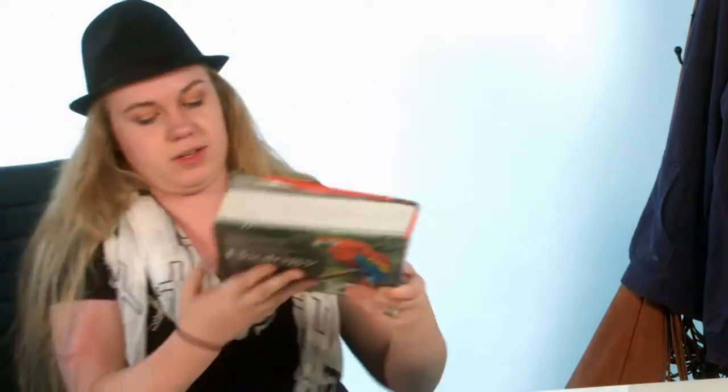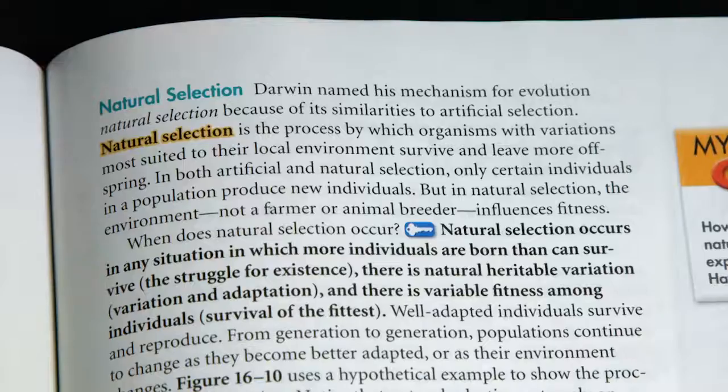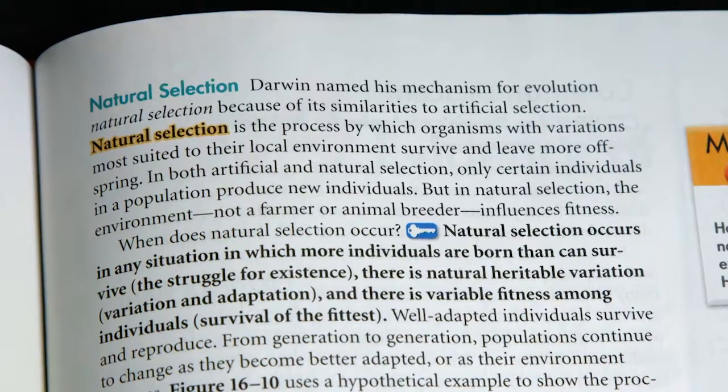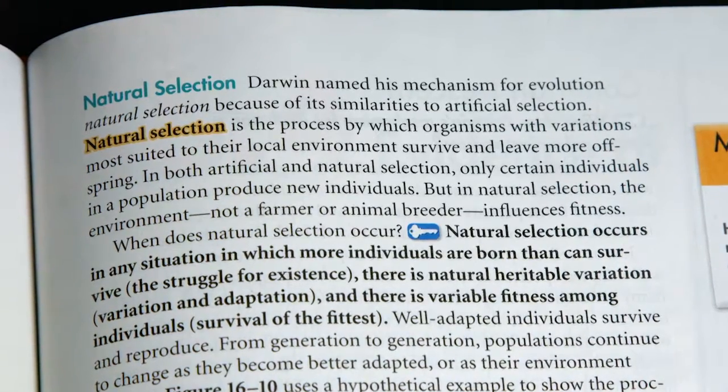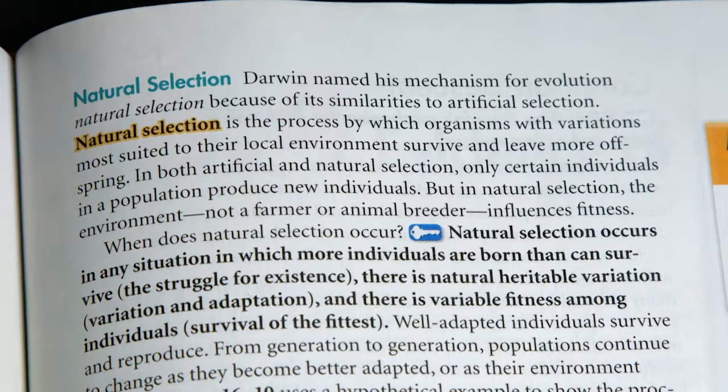What are we studying today? Natural selection. There's a great definition in our biology textbook: natural selection is the process by which organisms with variation most suited to their local environment survive and leave more offspring. Evolutionary theory holds that natural selection is one of the forces that drives evolution.